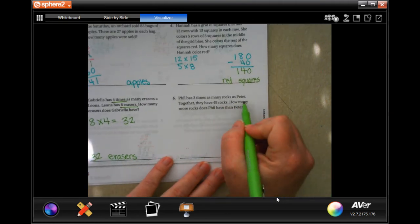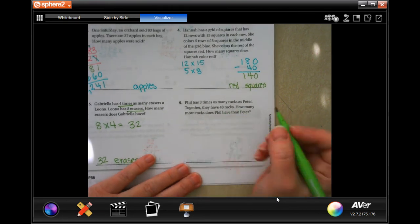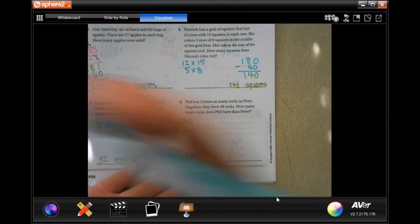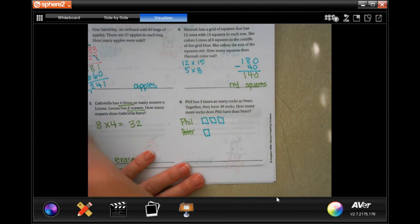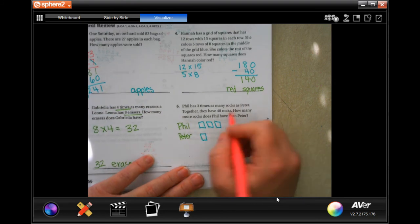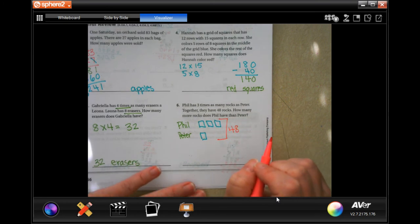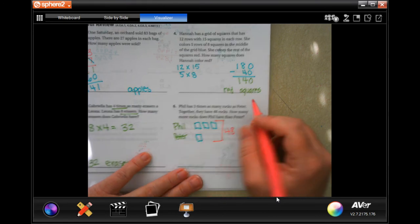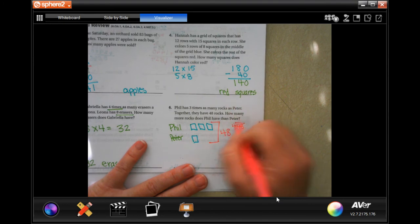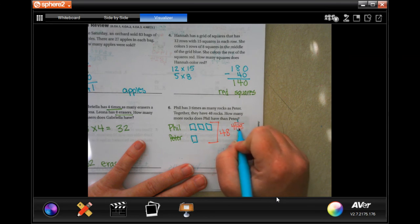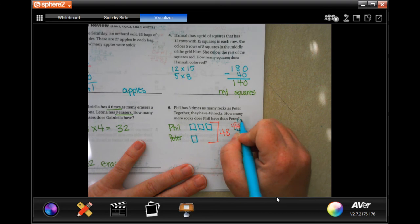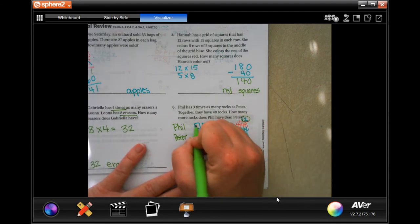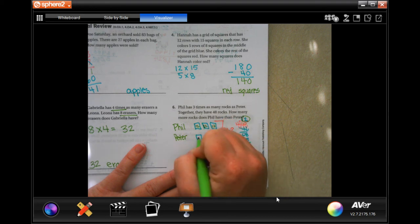Phil has 3 times as many rocks as Peter. Together, they have 48 rocks. So we have Phil, and we have Peter. Phil has 3 times what Peter has. So if Peter has 1, Phil has 3, he has 3 times more. And together, they have 48 rocks. This means that we have to take the total number and divide it by how many blocks we have. So 1, 2, 3, 4. So 48 divided by 4 is, 4 goes into 4, 1. 4 subtract is 0. Bring down our 8. 4 goes into 8 twice. That means that each one of these blocks is going to be worth 12.